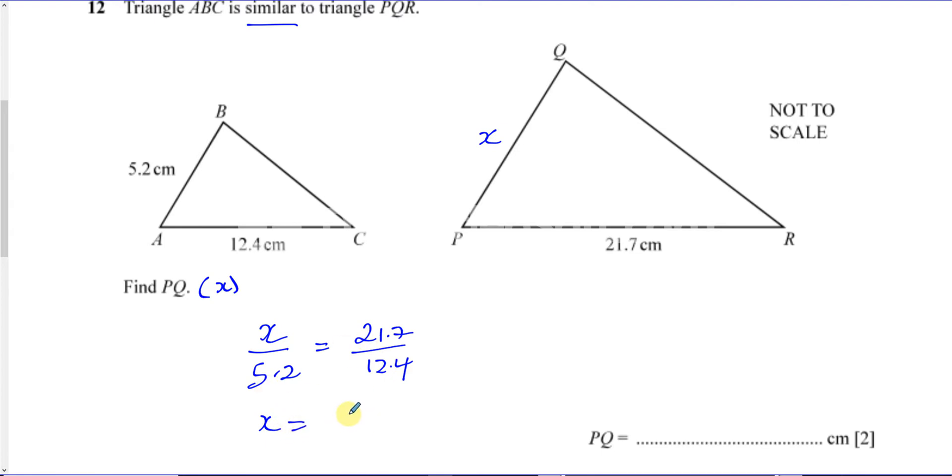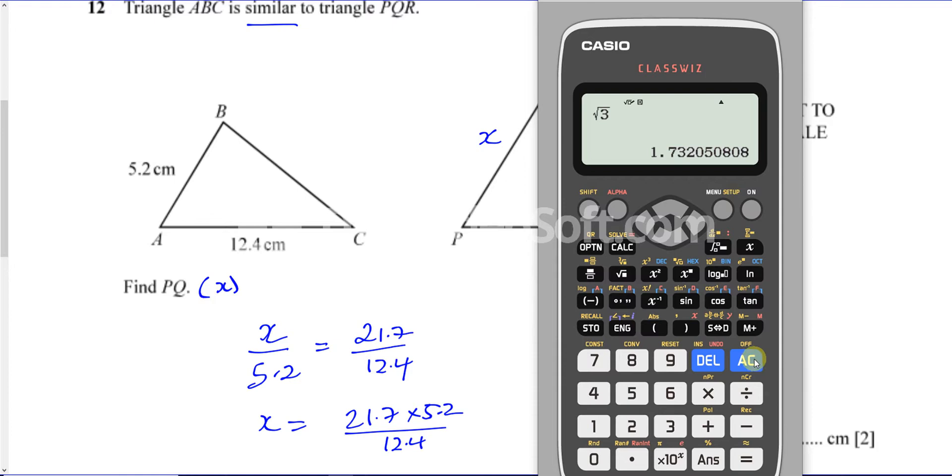So you have 21.7 times 5.2 over 12.4. And that will give us our answer. So we have 21.7 times 5.2 divided by 12.4. It's the same thing as what we've written there. OK, which will give you 9.1.